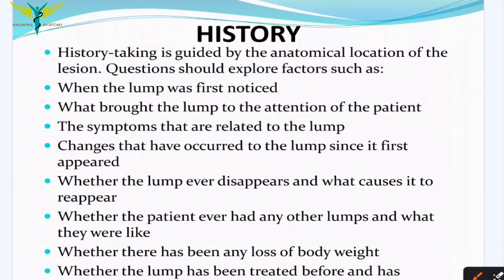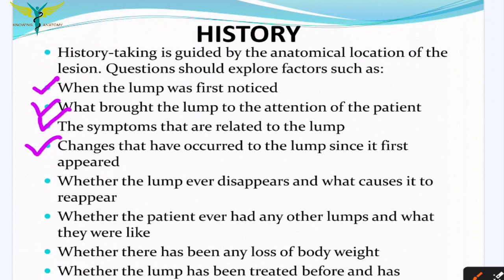History taking is guided by the anatomical location of the lesion. Questions to ask include: when was the lump first noticed, what brought it to the patient's attention, symptoms related to the lump, and changes that have occurred since it first appeared. Also ask whether the lump ever disappears and reappears, whether the patient had any other lumps, whether there has been any loss of body weight, and whether the lump has been treated before and reoccurred.